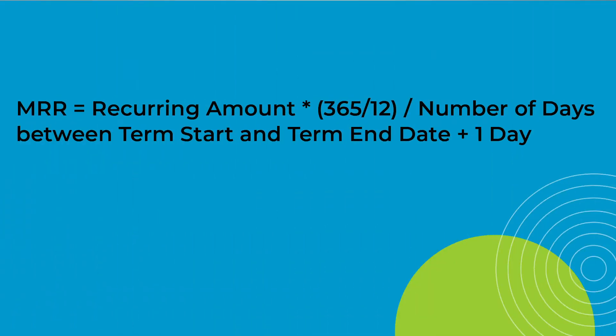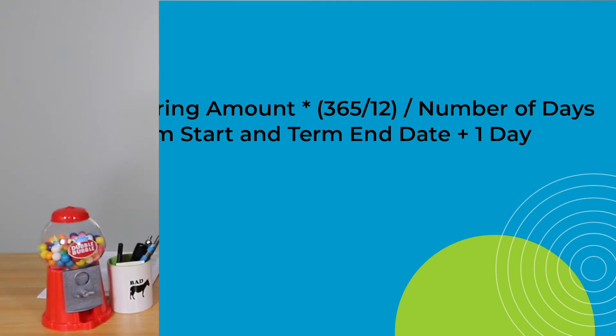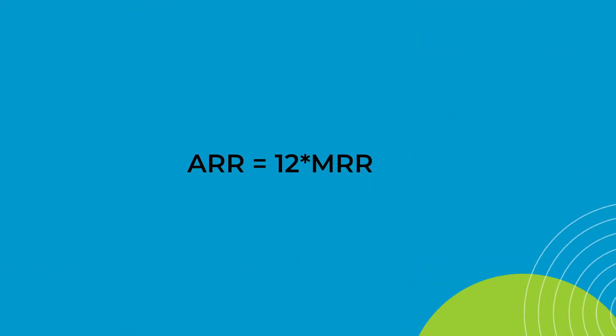If you remember from our MRR videos, we calculated MRR as: MRR equals the recurring amount times 365, divided by 12, divided by the number of days between the term start date and the term end date plus one day. Following that logic, ARR is simply MRR times 12.